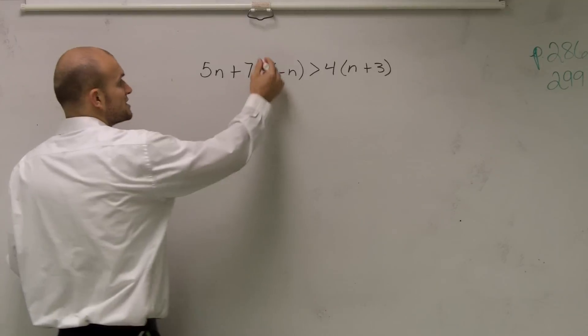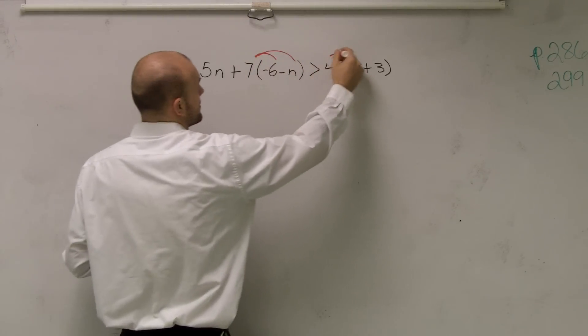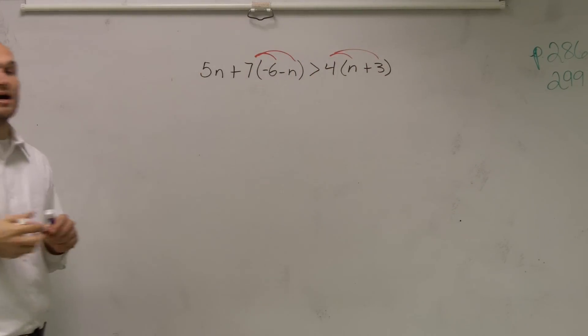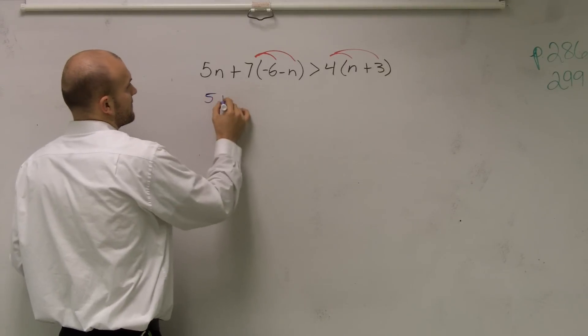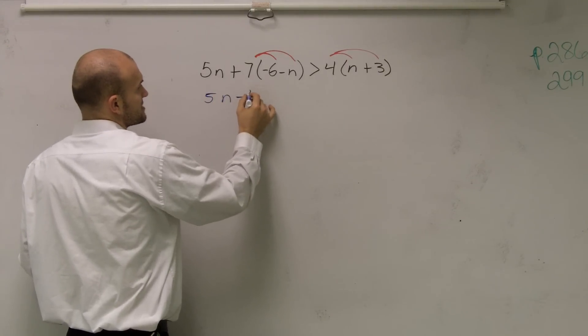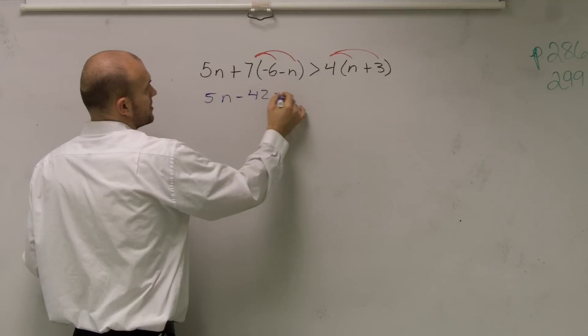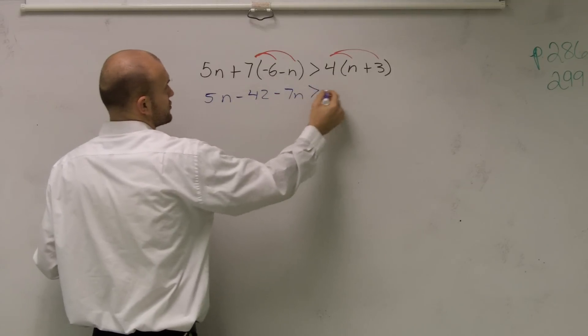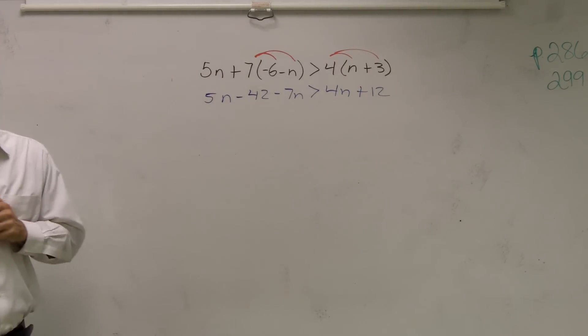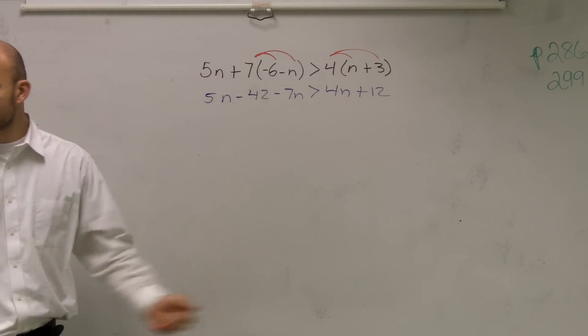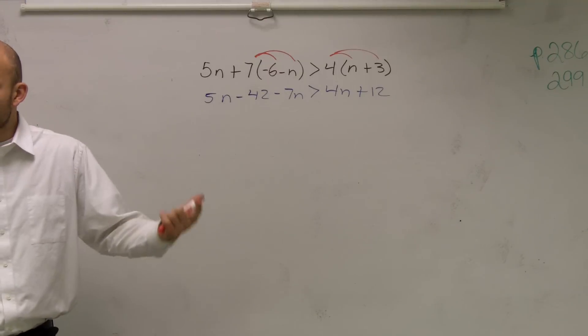Whenever we see parentheses, the first thing you need to do is distributive property. Make sure you multiply the number outside the parentheses to everything inside. So we now obtain 5n minus 42 minus 7n is greater than 4n plus 12. That was the first step - distributive property.